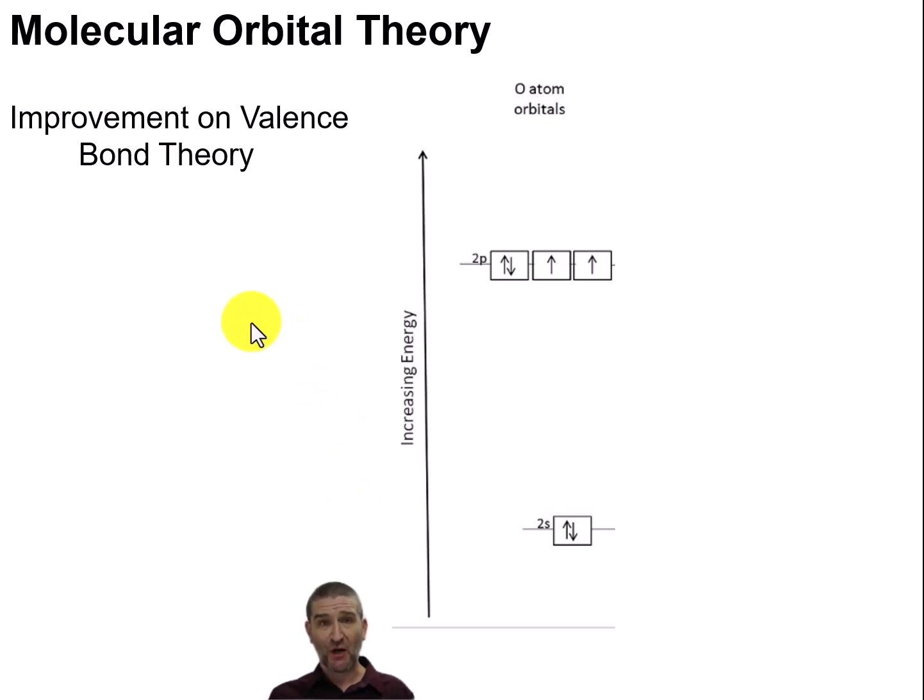So next up, we came up with a theory called molecular orbital theory. This is going to be an advancement on the valence bond theory.